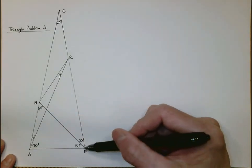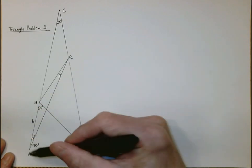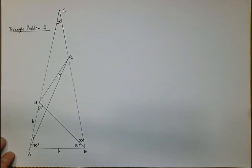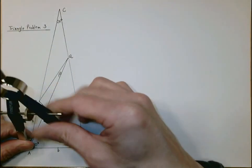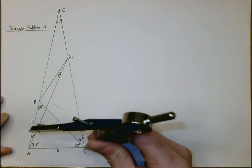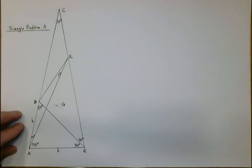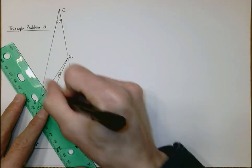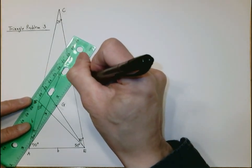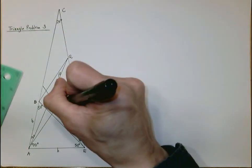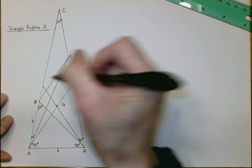So AB will be congruent to AE. Let me call AE small b, and AB will be small b as well. I'm going to construct an equilateral triangle here with AE as the base of the triangle. I'm going to measure the same AE, make one more arc, and call this point G. Then I'm going to connect G to E and connect G to A. I'm going to call this point D and this point F, and connect these two points.